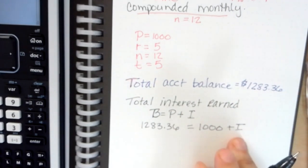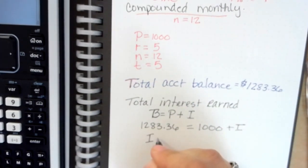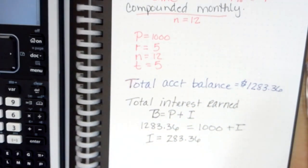So interest earned was two hundred and eighty three dollars and thirty six cents, which isn't bad for five years, just leaving a thousand dollars in the bank.